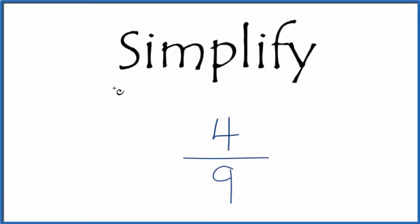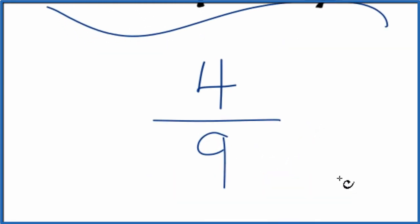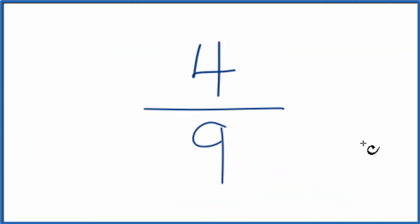If you need to simplify the fraction 4 over 9, here's how we do it. What we're going to do is find another fraction that's equivalent - it has the same value as 4 over 9, it's just that it's in lowest form. What we need is a common multiple, something that goes into 4 and 9 evenly.